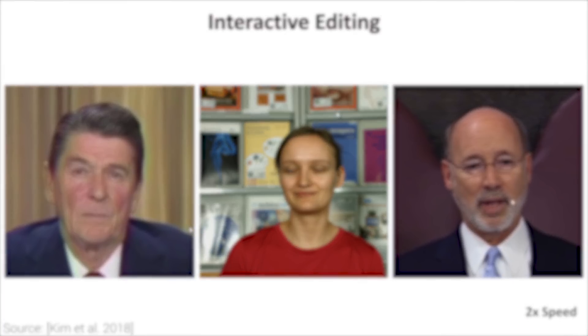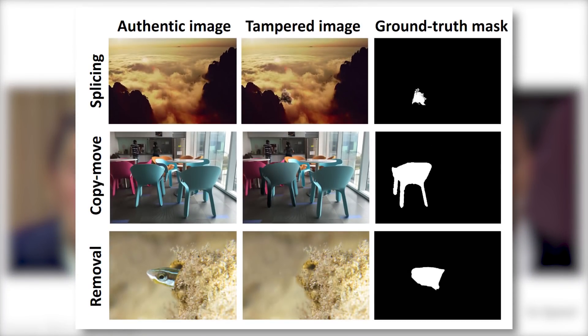That is great, but what about the more general case with manipulated photos? This new learning-based algorithm can look at any image and highlight the regions that were tampered with.